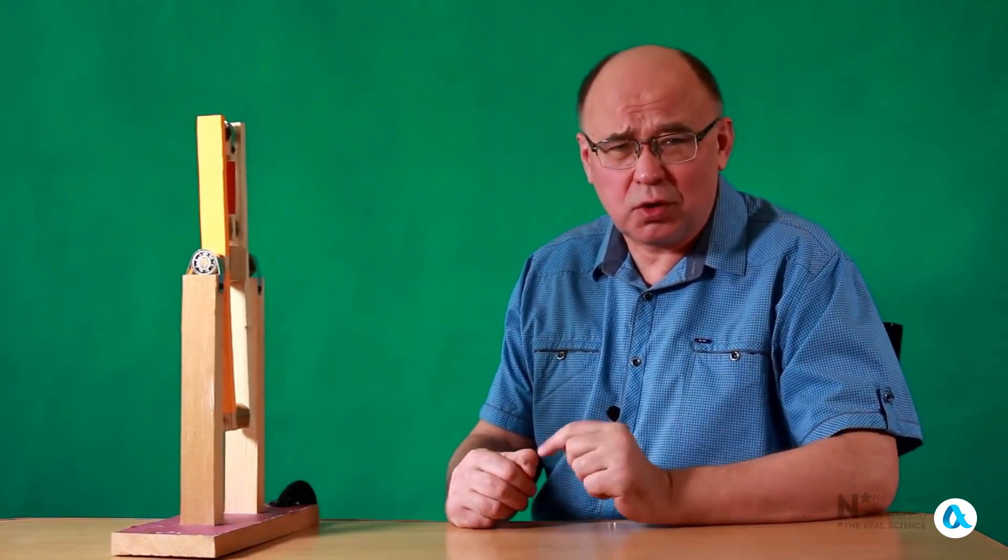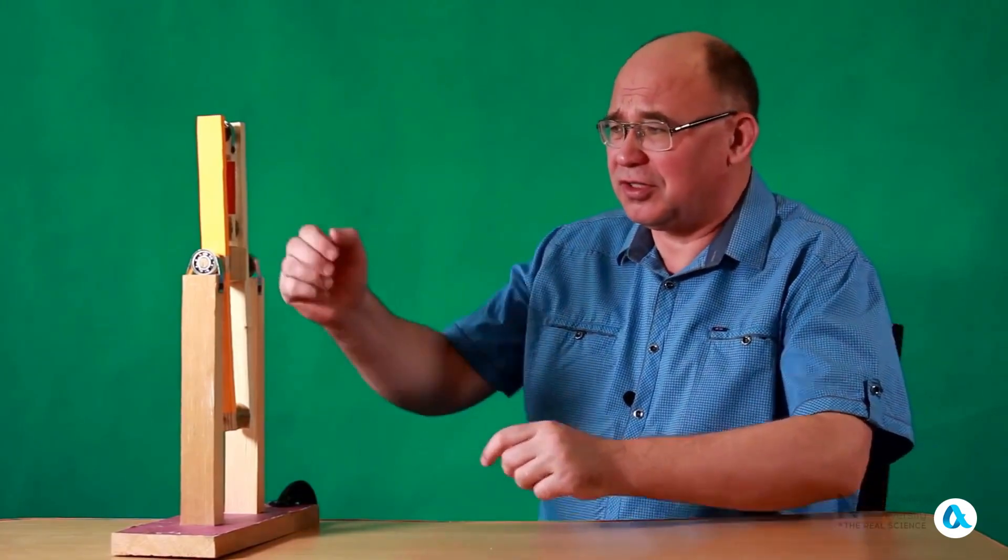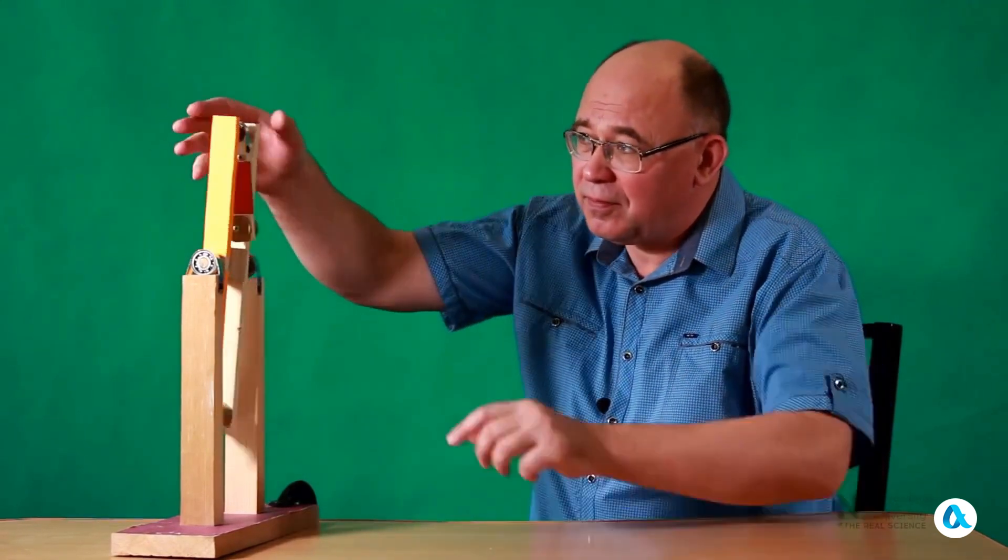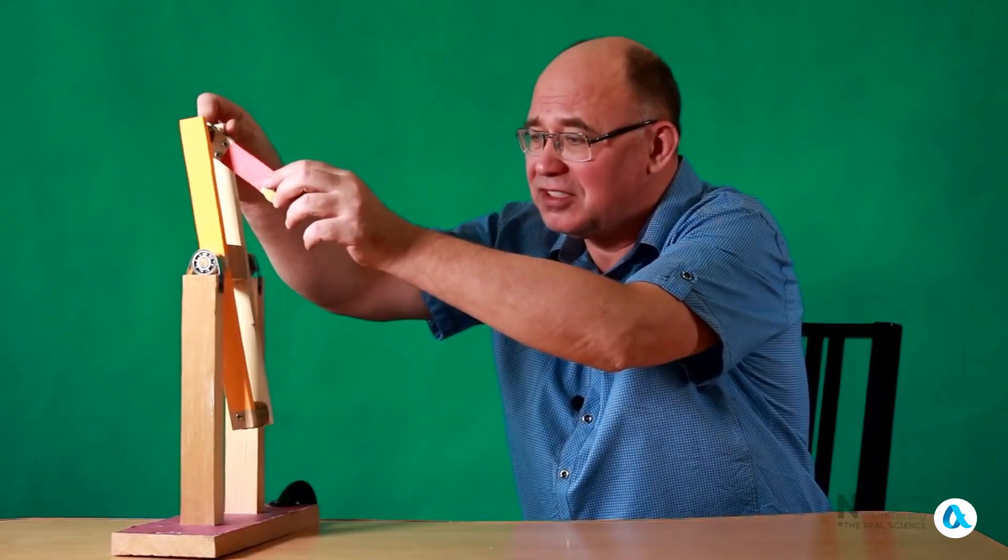The simplest type of system behavior is observed when the deviation angles of both pendulums from the vertical are small. In this case, the restoring force is proportional to the angle of deviation, and the system's motion consists of harmonic oscillations in two normal modes. The first mode occurs in antiphase, while the second mode is in phase. At the same time, the oscillation frequency of the second mode is noticeably higher than that of the first mode.